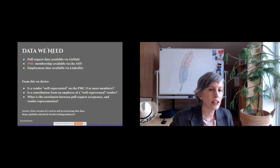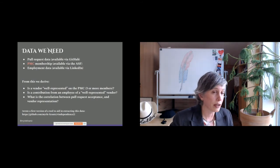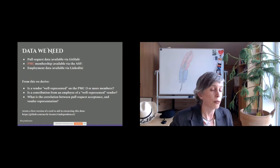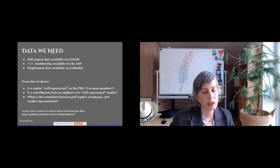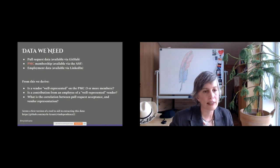What data do we need? We need pull request data, available via GitHub. We also need PMC membership, available via the Apache Software Foundation website for Apache projects. And we need employment data, often available via LinkedIn, covering 80 to 90 percent of contributors. From this data, we can derive whether a vendor is well-represented on the PMC — I've defined 'well represented' as a vendor having three or more members. There's also majority represented, just represented (one or two members), not represented (none), and unknown employer. We then look at the pull request and correlate it to the person who submitted it and their employer on LinkedIn. What is the correlation between pull request acceptance and vendor representation?